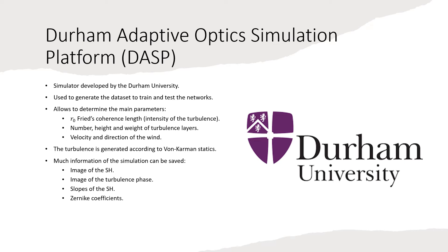Then, for the testing process, in an ideal situation, real data should be used to determine the quality of the reconstructions given by the artificial neural network. In this work, simulated data were used both for training and testing. The DASP — Durham Adaptive Optics Simulation Platform — was employed to perform the simulation. DASP was developed by Durham University.